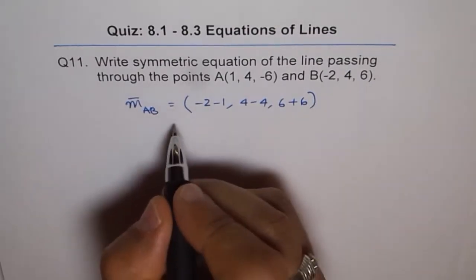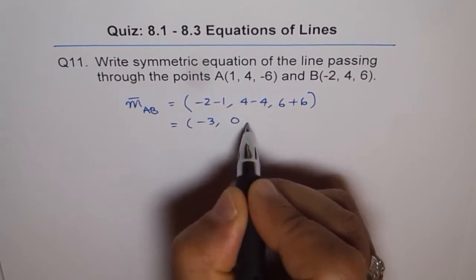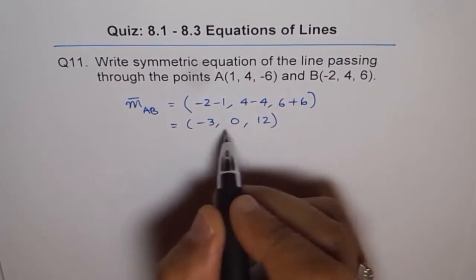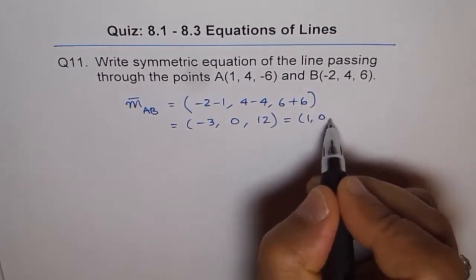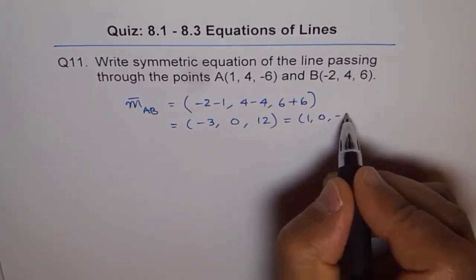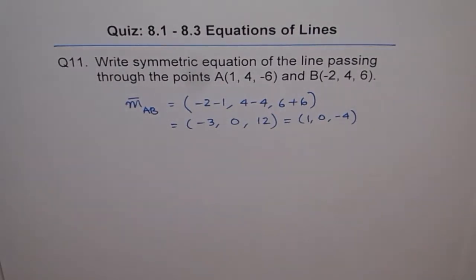Now, here, you will see that direction vector is -3, and then we get 0 here, and 6 plus 6 is 12. We can always reduce this further, and we can take -3 common, so we get 1 here, 0, and when 12 is divided by -3, we get -4. So that becomes our direction vector.